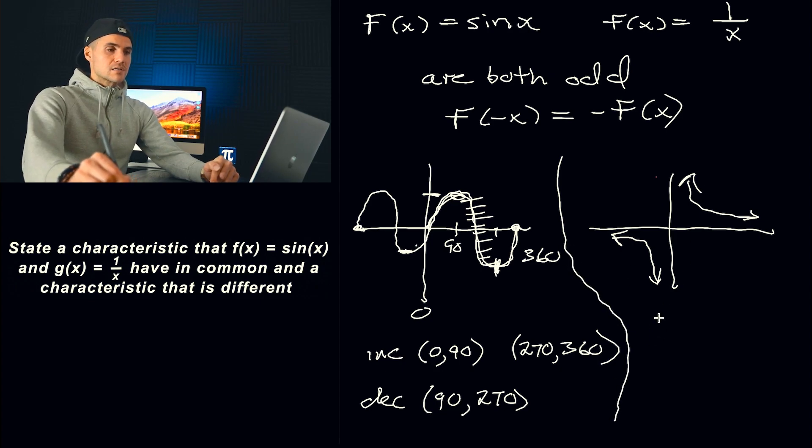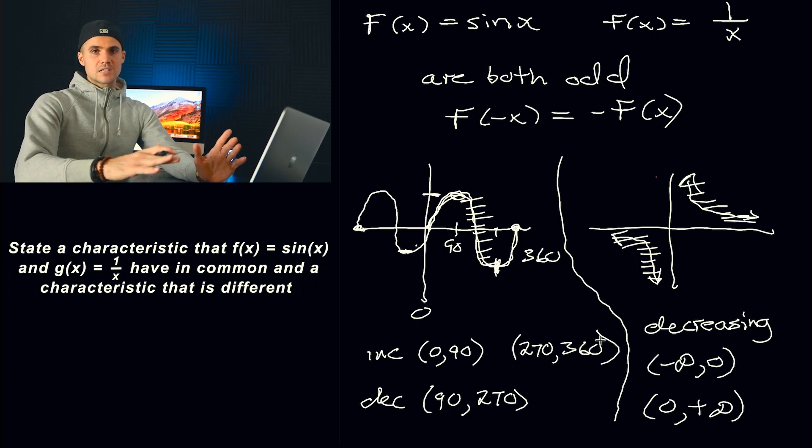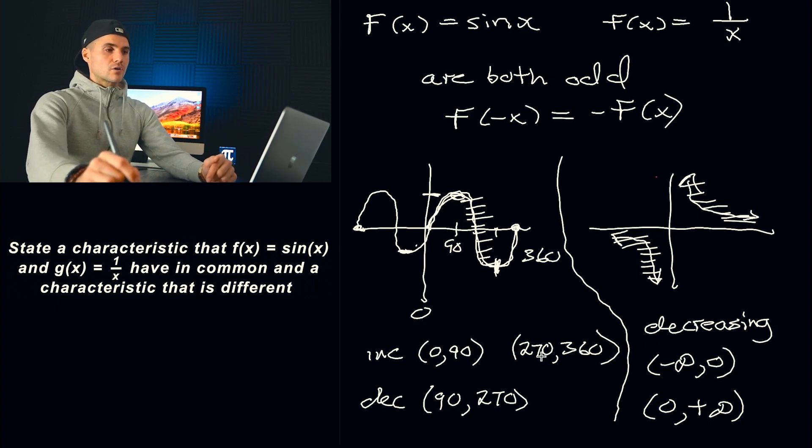While 1 over x, notice that it only has decreasing intervals. The function is only decreasing the whole time. If you notice from negative infinity to that vertical asymptote of 0, y values are always going down. And then also from 0 to an x value of positive infinity, the y values are going down. So completely different increasing and decreasing intervals. So that's another characteristic that is different. So a bunch of characteristics that are different for both of these functions.